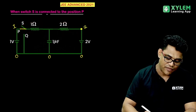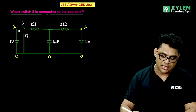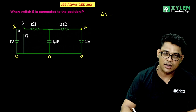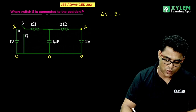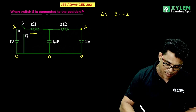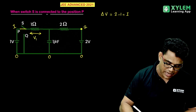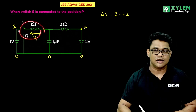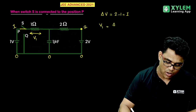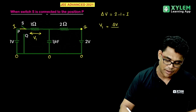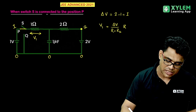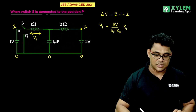The potential difference delta V is equal to 2 minus 1, which equals 1. The potential drop V1 equals delta V divided by the total resistance R1 plus R2, multiplied by R1. The potential drops in direct proportion to resistance.